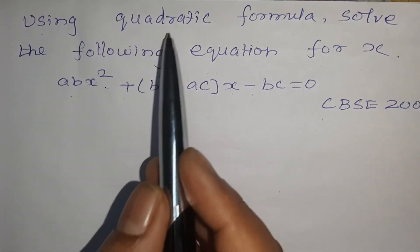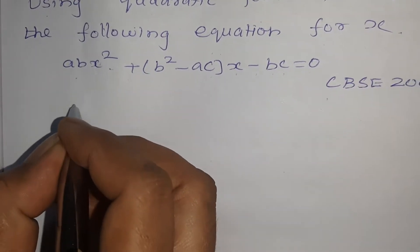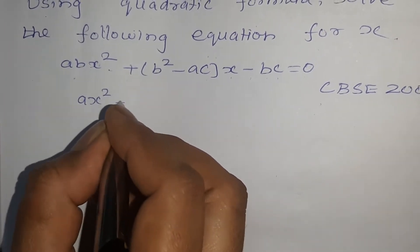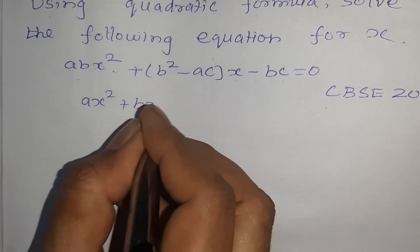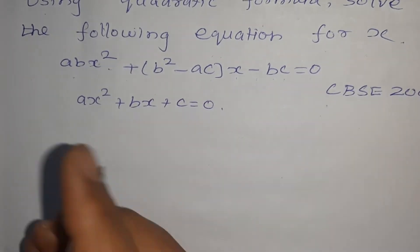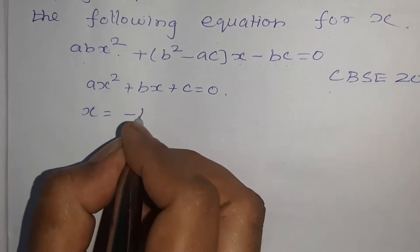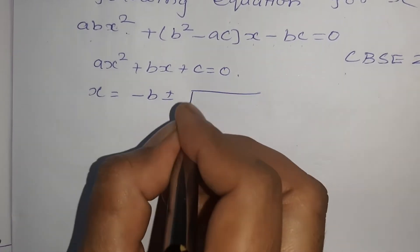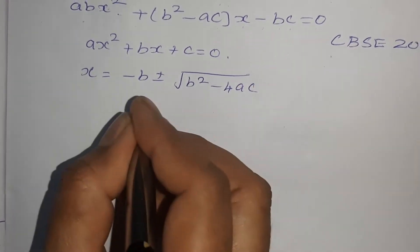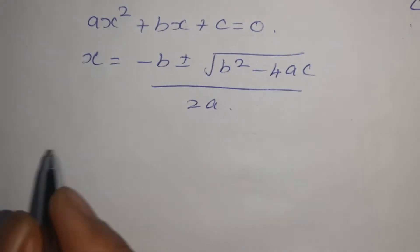Now, what is the quadratic formula? The quadratic formula: if the quadratic equation is of the form Ax² + Bx + C = 0, then the quadratic formula is x = (−B ± √(B² − 4AC)) / 2A.